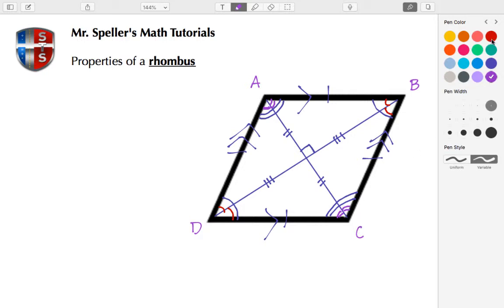And the last thing I want to talk about is consecutive angles. So angle A and angle B are consecutive, and these consecutive angles are always supplementary. That means angle B plus angle C is also 180.